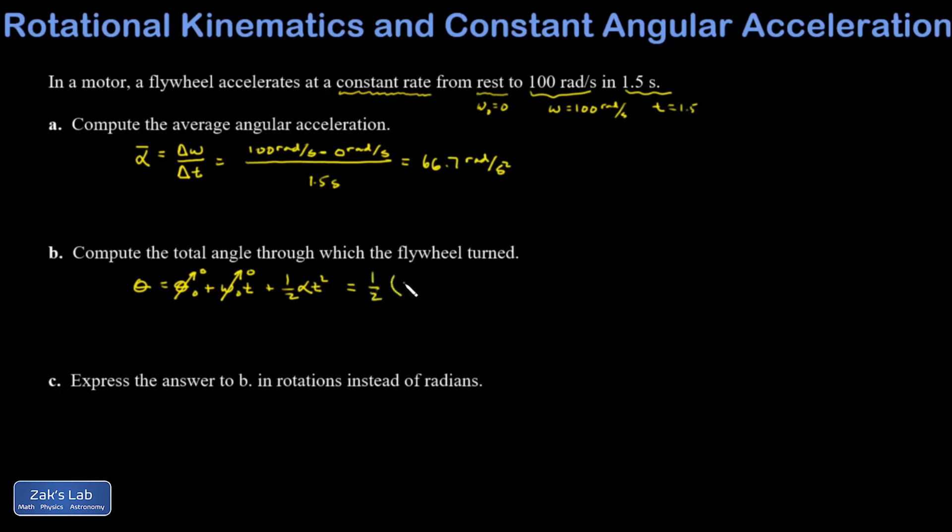Now I should be able to get my angle out of this. One half times alpha, which was 66.7 radians per second squared, times how much time went by, 1.5 seconds squared. You can see the second squared cancel, leaving me with units of radians. And for this, I get 75.0 radians.